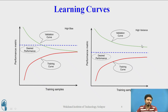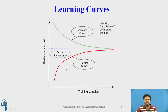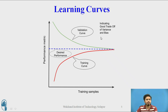You might ask what the ideal diagram would look like. The ideal case — what every ML developer expects — is that both the training and validation curves converge at the desired performance level by the end of training. This indicates a good trade-off of bias and variance, which is what we practically expect from well-performing ML models.